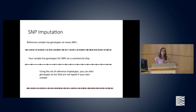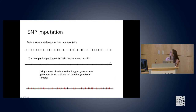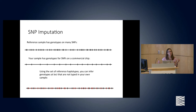To address this, you perform imputation of your SNPs to a reference panel. In this example, a reference panel has genotypes on many SNPs across the genome, while our commercial chip has a much sparser distribution. We can use the reference haplotypes to infer genotypes at loci not typed in our own samples, leveraging the linkage disequilibrium between nearby SNPs to fill in missing genotypes.